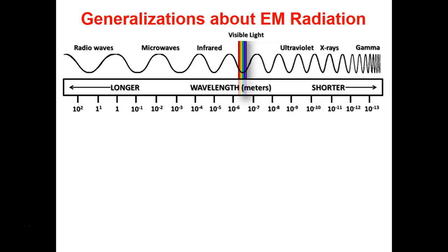So the order again from low energy to high energy goes: radio waves, microwaves, infrared, then the visible light spectrum which is ROYGBIV, then ultraviolet, X-rays, and gamma rays.